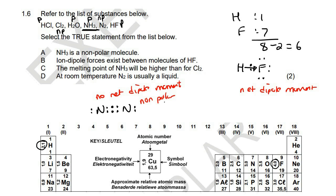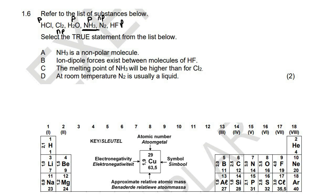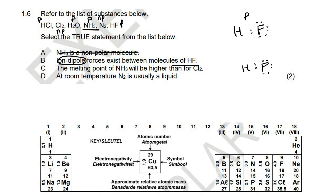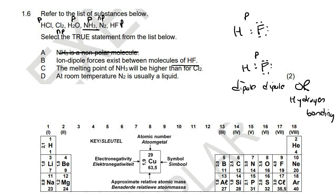So we now have a good idea of what's polar and what's non-polar. Let's see how this goes with the questions. So NH3 is a non-polar molecule — that's not true because we worked out that it's a polar molecule. Ion-dipole forces exist between molecules of HF — no, we've worked out that HF is polar. If you put two polar molecules next to each other, they have dipole-dipole forces. There are no ions here, so it definitely is not going to be ion-dipole.